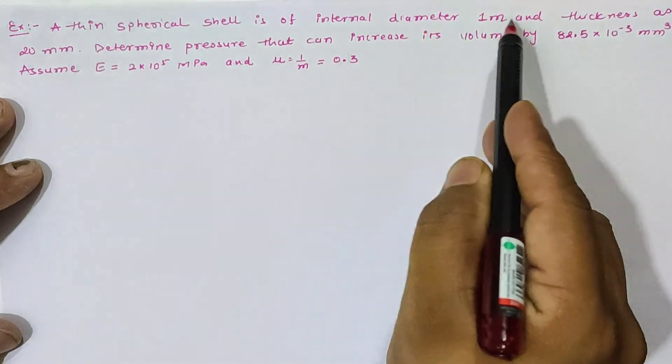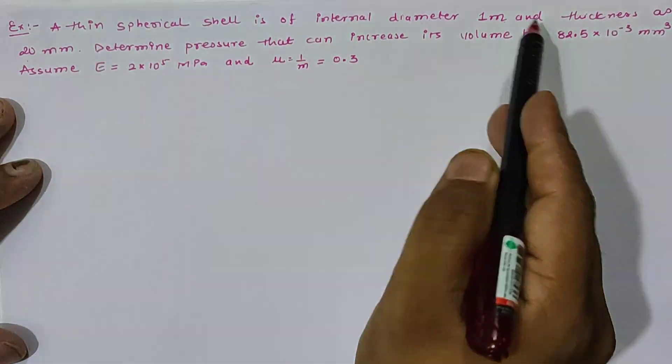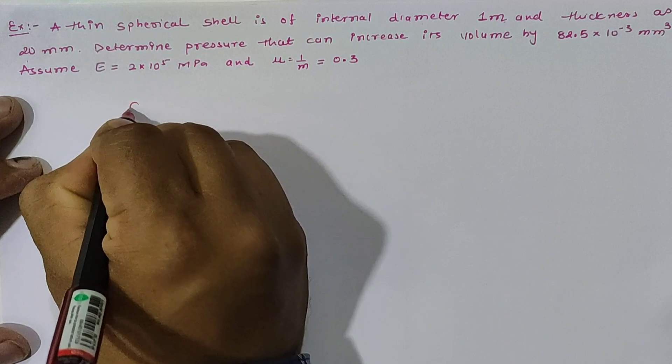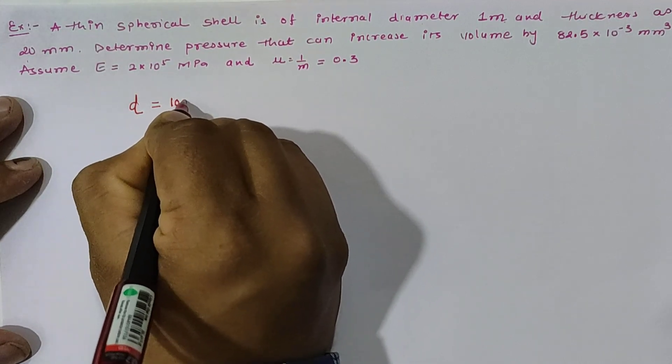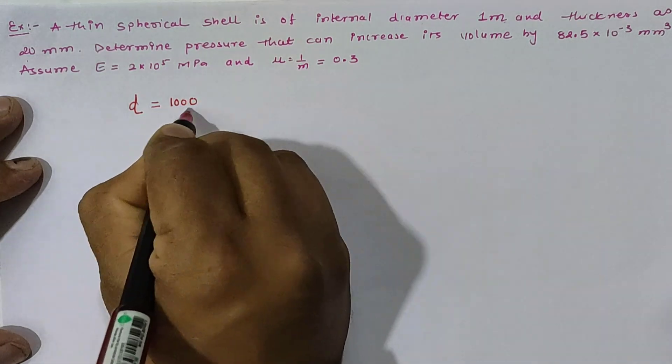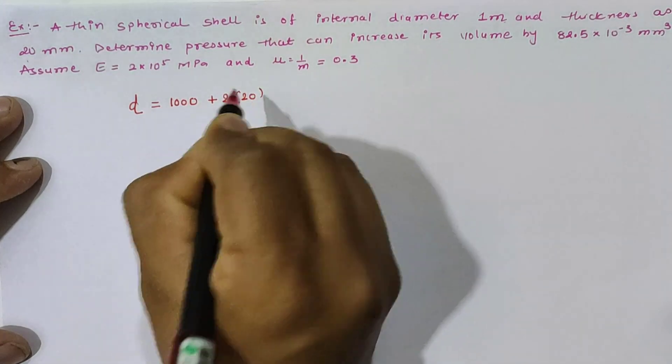internal diameter as 1 meter and thickness as 20 mm. So here we have given the internal diameter, so our d value is internal diameter as 1 meter, so 1000 mm plus twice the thickness of sphere, so total value is 1040 mm.